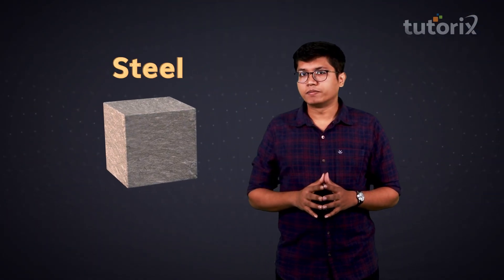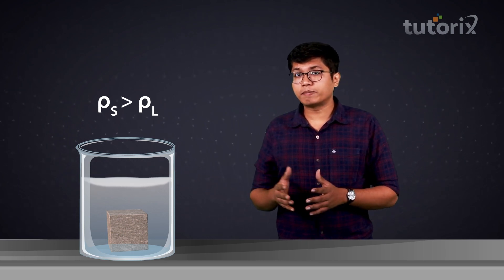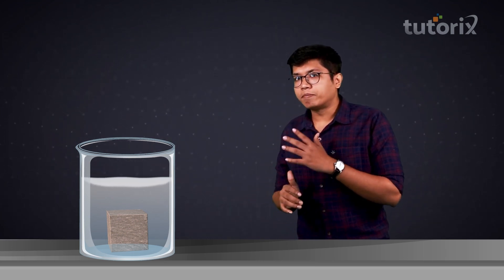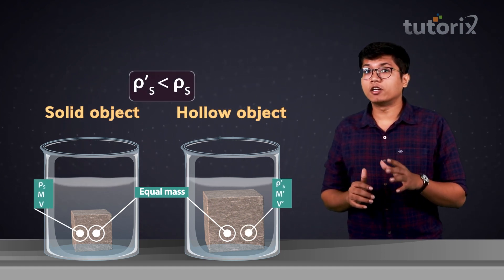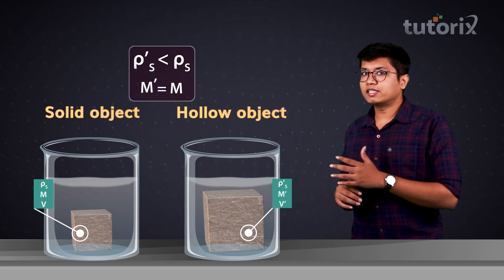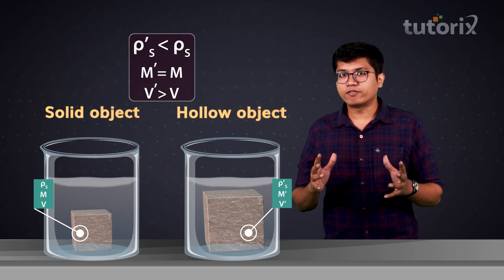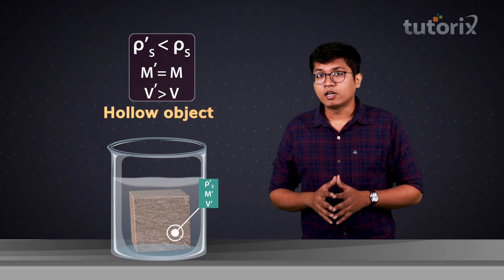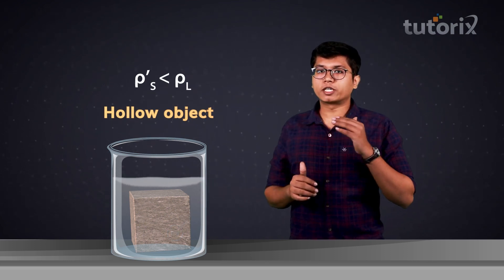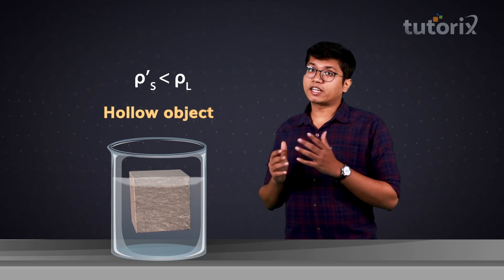Take steel for example. Steel is much denser than water, and if you place a steel cube, it's going to sink because the density condition for sinking is matched. However, if you take the same amount of steel and spread it out into a hollow shell, then the effective density of this object is pretty low. The mass is still the same, but it has been spread out over a larger volume. From the fluid's perspective, it just sees the mass of the object and the volume of water displaced. The effective or average density of the hollow object is lower than the density of the surrounding fluid, and hence it will rise up.